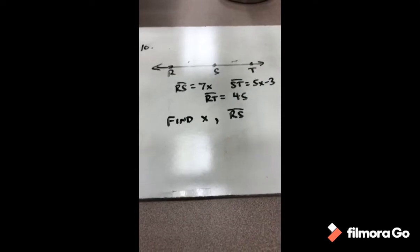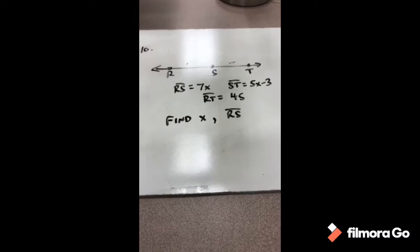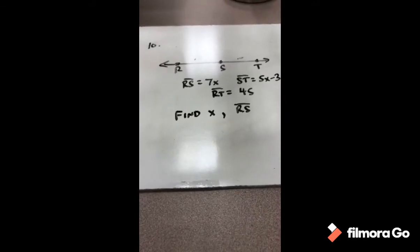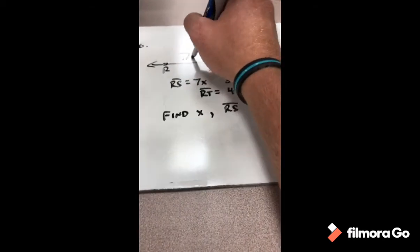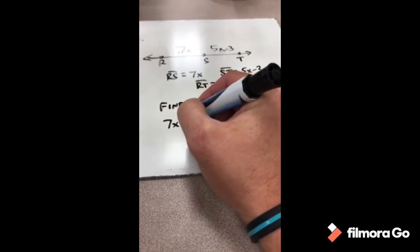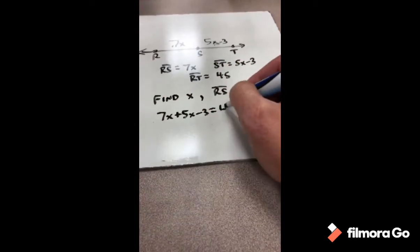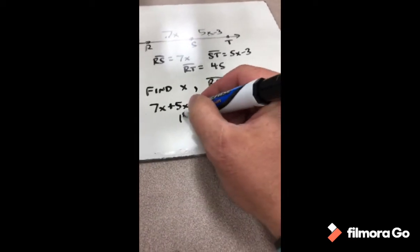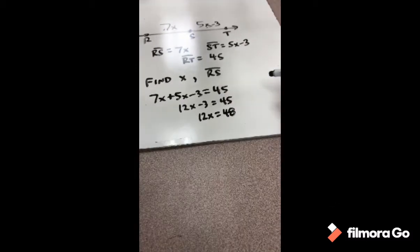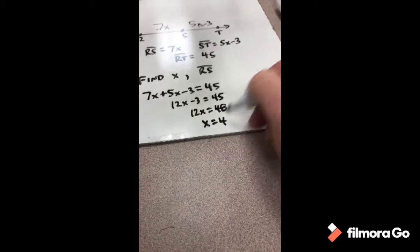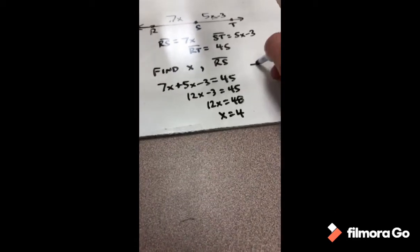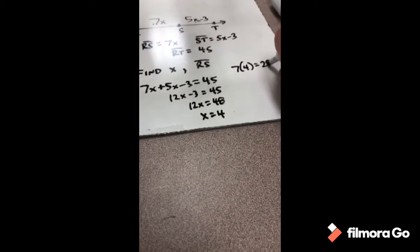For number 10, RS is 7x, ST is 5x − 3, and RT is 45. Find x and find the length of RS. We set up the equation: 7x + (5x − 3) = 45. Combining like terms: 12x − 3 = 45. Adding 3 to both sides: 12x = 48, so x = 4. Plugging back in to find RS: 7 × 4 = 28.